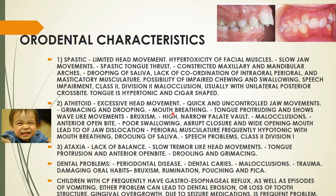In athetoid cerebral palsy there can be mouth breathing, tongue protrusion with a wave-like movement, and bruxism which is commonly seen. There is a high narrow palatal vault, and the malocclusion seen is anterior open bite. There is poor swallowing, abrupt closure and wide opening leading to jaw dislocation of the TMJ. The perioral musculature is frequently hypotonic with mouth breathing and drooling of saliva.